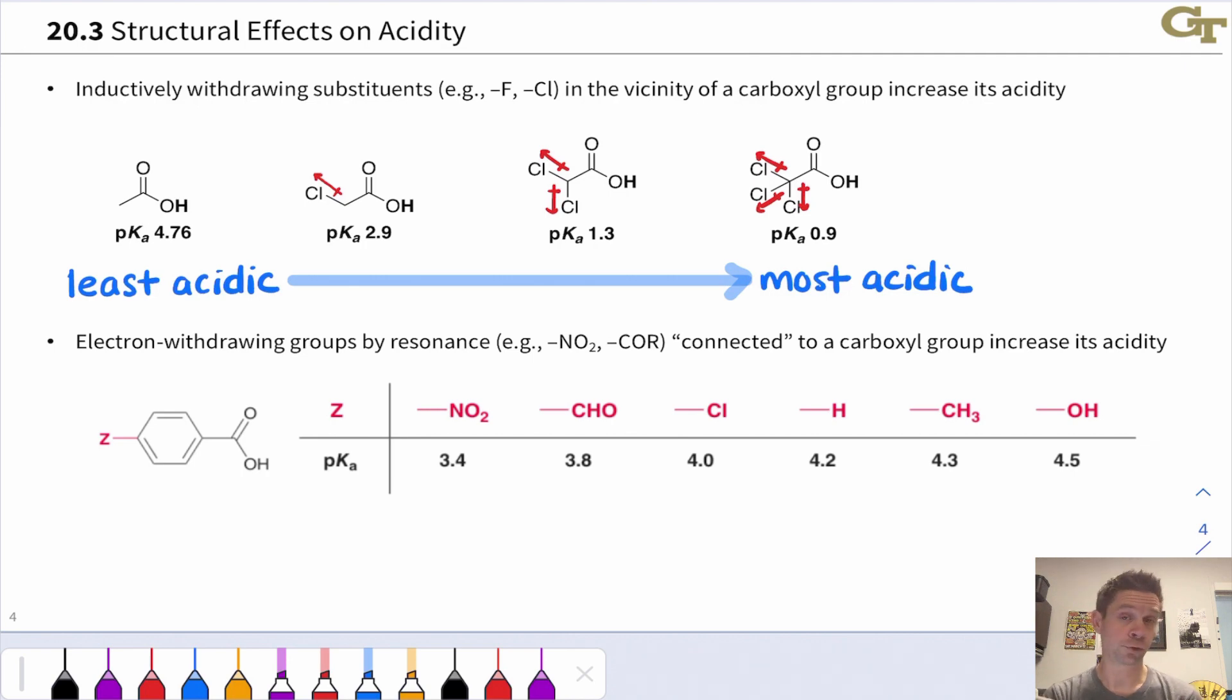Resonance donating and withdrawing groups have a similar effect. For example, strong electron withdrawing groups will tend to make the carboxylic acid group more acidic.